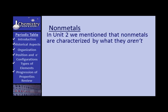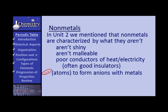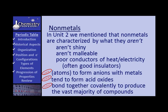Let's look at non-metals. In Unit 2, we mentioned that non-metals are characterized by what they aren't. They aren't shiny. They aren't malleable. They aren't good conductors of heat and electricity. As a matter of fact, they're often good insulators. Well, let's add a few more things to that. The atoms tend to form anions when reacting with metals. Non-metals tend to form acid oxides. And non-metals bond together with other non-metals covalently to produce a huge array of compounds. Carbon and its ability to bond covalently, producing long chains with branches, comprises the largest group of elements in the system.